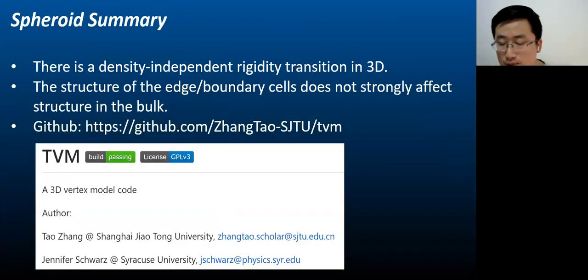To summarize, there is a density independent rigidity transition in 3D. The structure of the boundary cells does not strongly affect structure in the bulk. And our code for the bulk system is publicly available on GitHub.